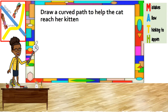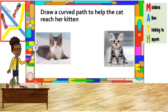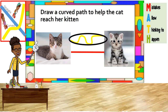Can you identify the curved path from the cat to her kitten? Do you remember what the curved path is? The curved path is walking in different directions. Which of these two paths has different directions? Well done, boys and girls! The yellow path is a curved path.